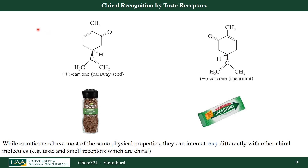We can also look at taste receptors. These two molecules are mirror images of each other — one rotates plane polarized light clockwise, the other counterclockwise — and they have the same connectivity. One of them tastes like caraway and one tastes like spearmint. So while enantiomers have mostly the same properties, they interact very differently with chiral molecules. In other words, our taste receptors are chiral.